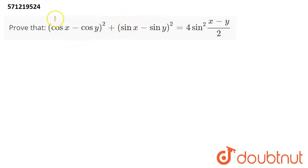Hello guys, today we have to show that (cos x - cos y)² + (sin x - sin y)² equals 4 sin²((x-y)/2). In order to solve this problem,